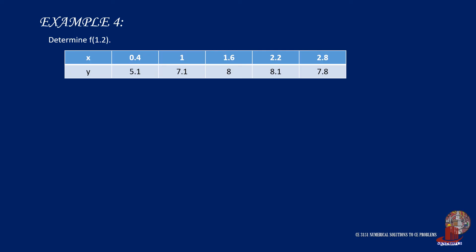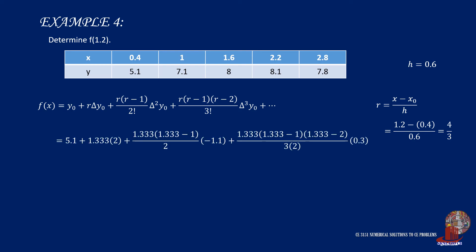By using the leading forward differences, y0 is taken as 5.1, the x interval h is 0.6, and r is 1.2 less 0.4, all over 0.6, which is then solved as 4 thirds. If we are to plug in the values into the formula, we are going to have the simplified value of f(1.2) as 7.5094648.